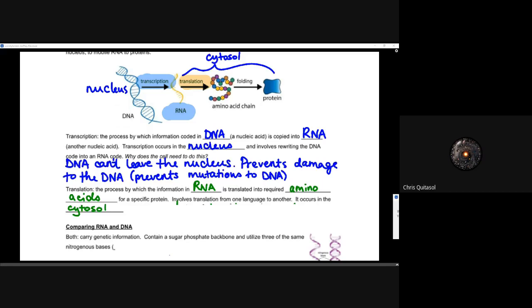That translation happens outside of the nucleus — in the cytosol — to allow for those proteins, once created, to go on and do the work they need to do, whether in the form of enzymes, creating structures, and so on.